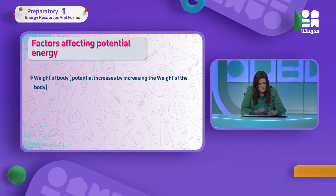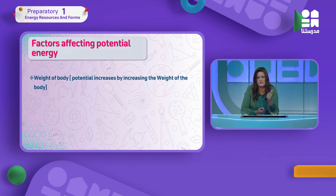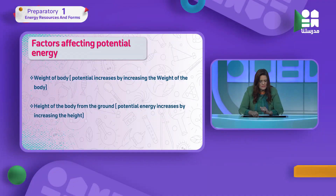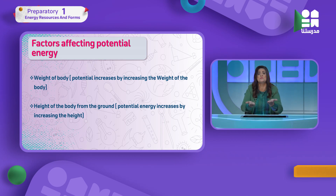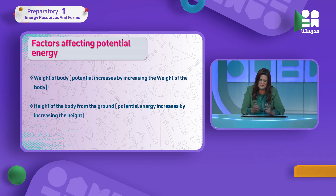Potential energy increases with increasing weight — that's one of the factors. As weight increases, the effort to lift the object increases, so work done increases, meaning potential energy increases. Similarly, as height increases, the effort done increases. So both weight and height increase potential energy together.